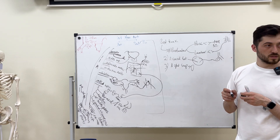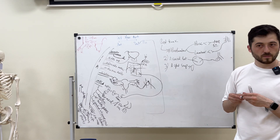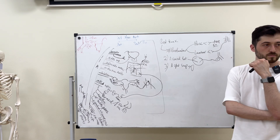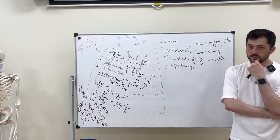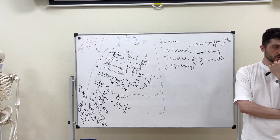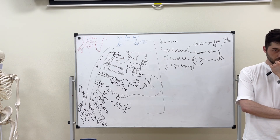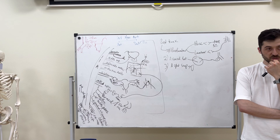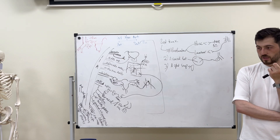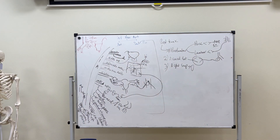Any questions about the internal iliac artery? It can have some small anastomoses, but they are not clinically significant. Is this explanation clear, guys?